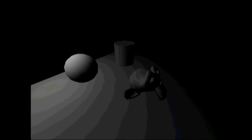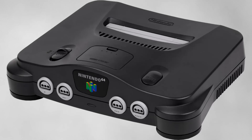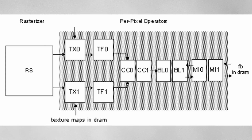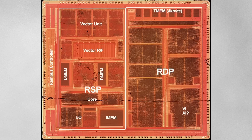Implementing toon shading on a modern GPU would involve writing a custom pixel shader, which means writing custom code for the GPU to run for each pixel, giving total freedom over how a pixel color is calculated. But the N64 doesn't have a programmable pixel pipeline. Instead it has a fixed pipeline that can be configured to achieve certain effects. The part of the N64 responsible for rendering pixels is called the RDP, or Reality Display Processor, and any onscreen effect is limited by what this device is able to do.